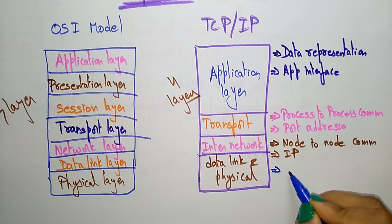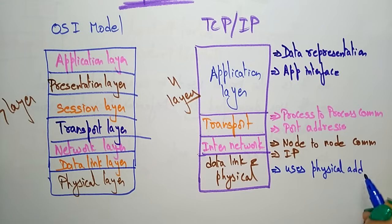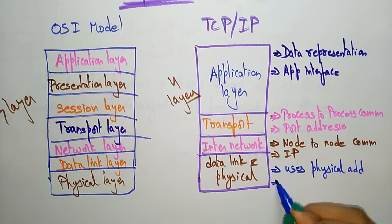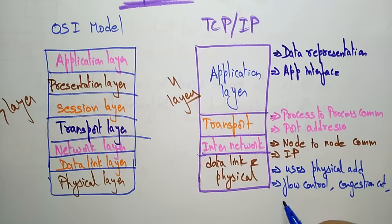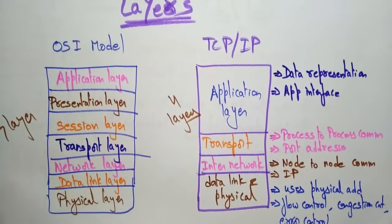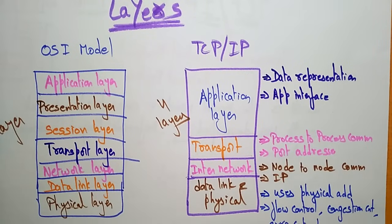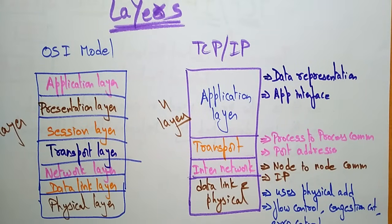The data link and physical layer uses physical addresses, and also handles flow control, congestion control, and error control. This is just an overview of the TCP/IP reference model. In the next video I'll explain the architecture of the TCP/IP network model, the protocols used in these layers, and the networks used in this layer. Thank you.